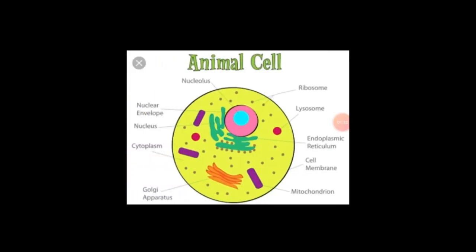Animal cell. The following organelles are present in an animal cell: ribosomes, lysosomes, endoplasmic reticulum, cell membrane, mitochondrion, Golgi apparatus, cytoplasm, nucleus, and nuclear envelope.